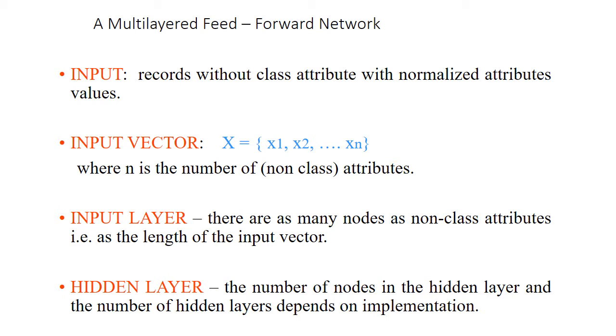What are the inputs? Inputs are records without class attribute with normalized attribute values. Here we will not feed the attributes. We will feed the records without the class name. What is the class? We don't know at input time. This is the input vector which has n number of attributes: x1, x2, xn. These are the n number of attributes that are fed into the neural network.